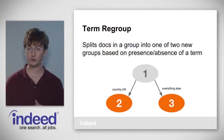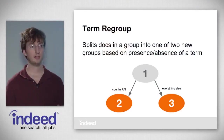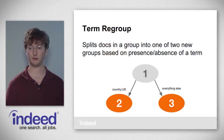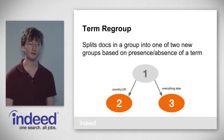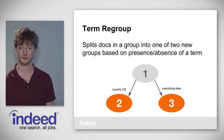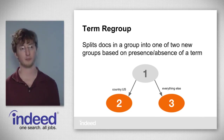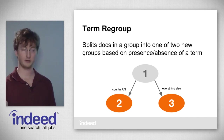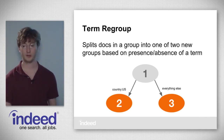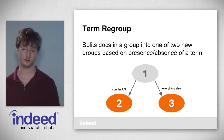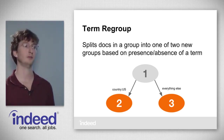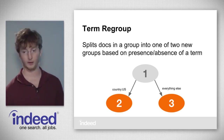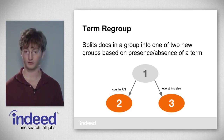Another type is term regroup. A term regroup splits your documents currently in a group into one of two new groups based on the presence or absence of a particular term. For example, if we have the term 'country U.S.' in the document, it goes from group 1 to group 2; if not, it goes to group 3. We could use this for our country U.S. query, but in practice we use query regroup.